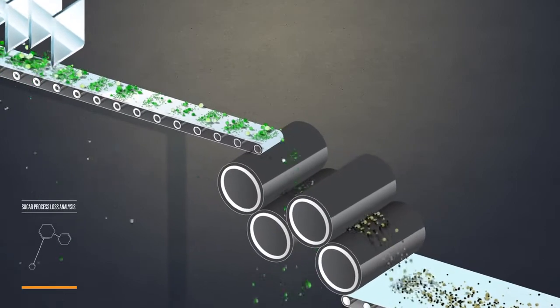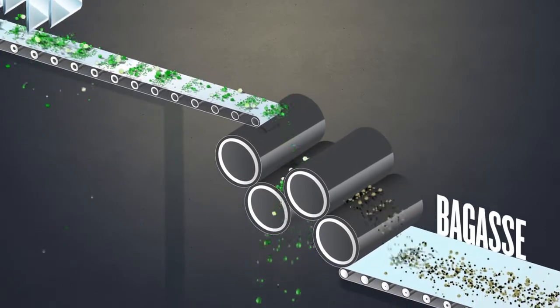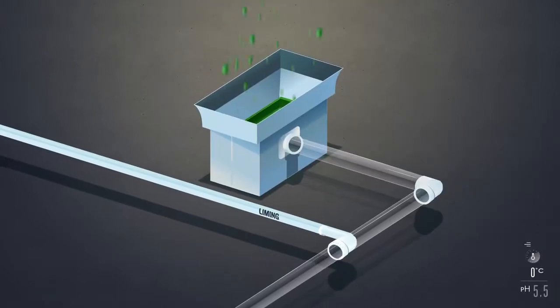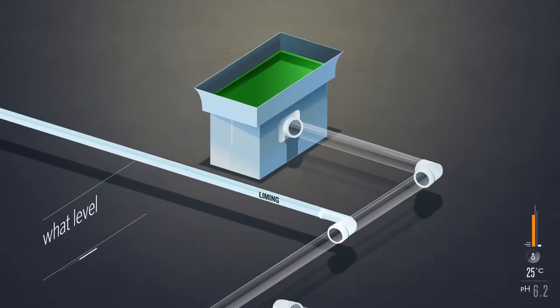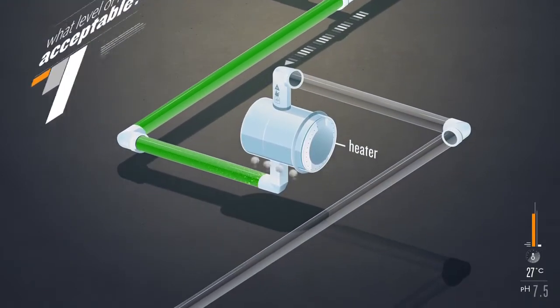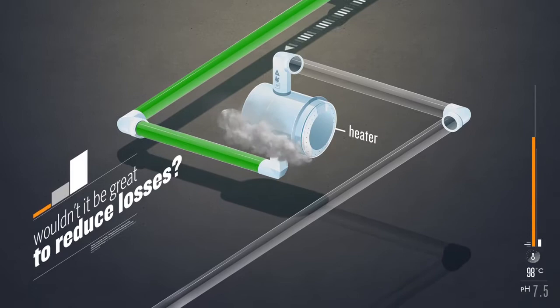Maybe you're not happy with the losses, but you don't know the technology to reduce them. Sure, loss is a natural part of the process, but what level of loss is acceptable? Are there any options to reduce sugar losses? Wouldn't it be great to reduce losses?